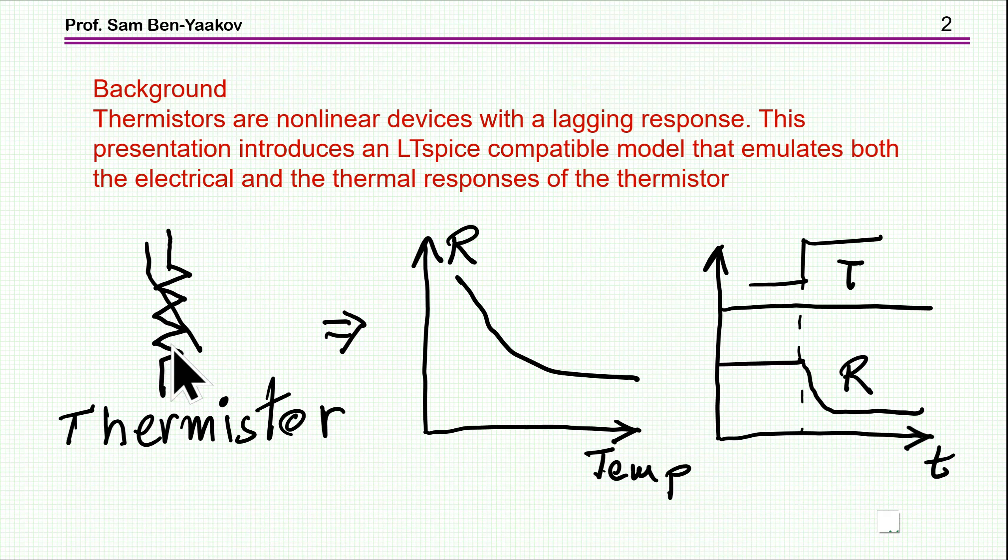Here is just a symbol of the thermistor, and here we see the typical response with temperature. That is how the resistance is changing with temperature. Negative temperature coefficient means that the resistance is going down. And here I'm showing a time domain response in which the temperature is assumed to have a step here, and the resistance will go down. But there is a lag here, it's not instantaneous, and this is due to thermal issues.